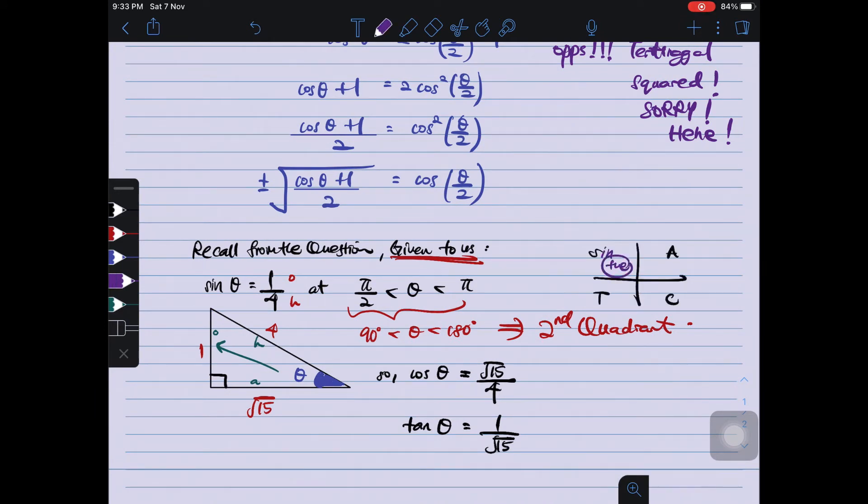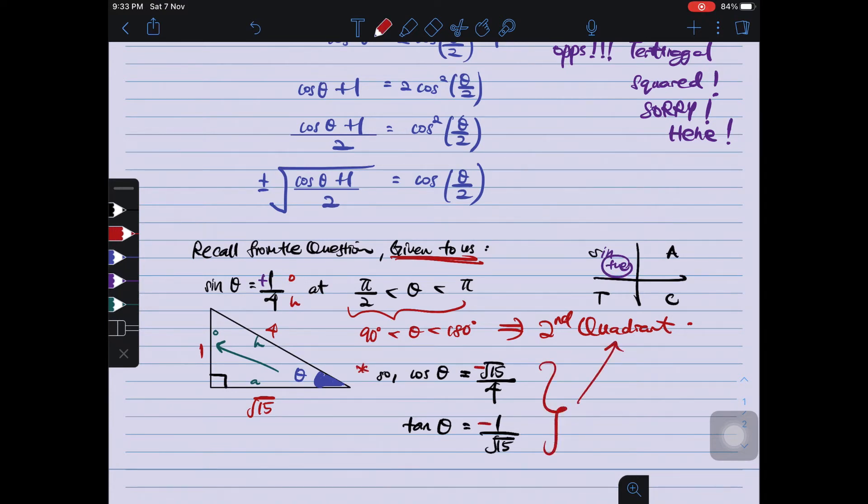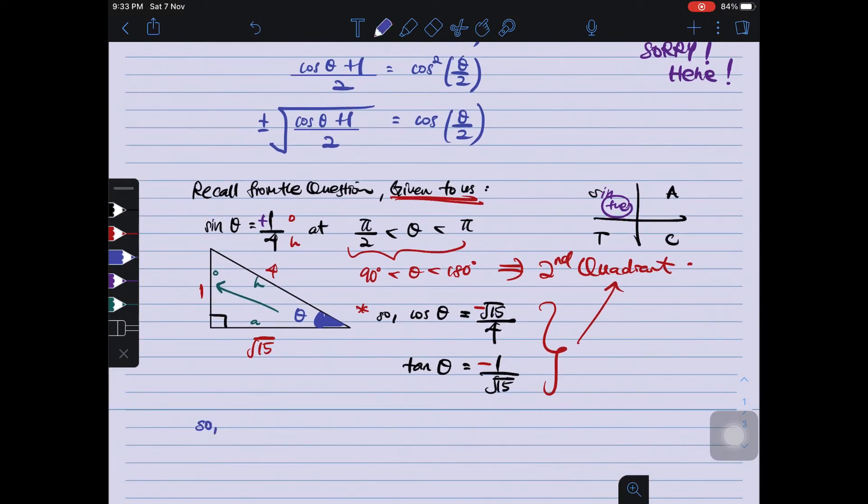And tan θ equals to 1/√15. And then, all sine teach crazy. Only the sine is positive. Therefore, the rest of the cos and tangent is negative. Sebab dia ada second quadrant, betul tak? That's why quadrant is important. Position is important. It affects the negative signs.